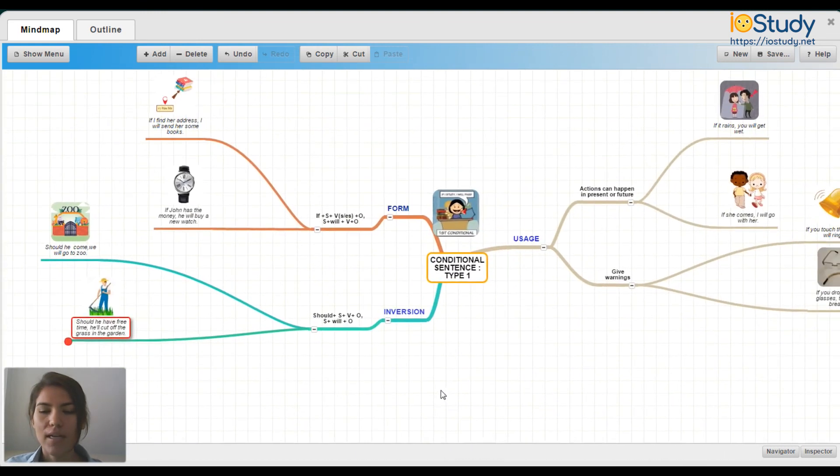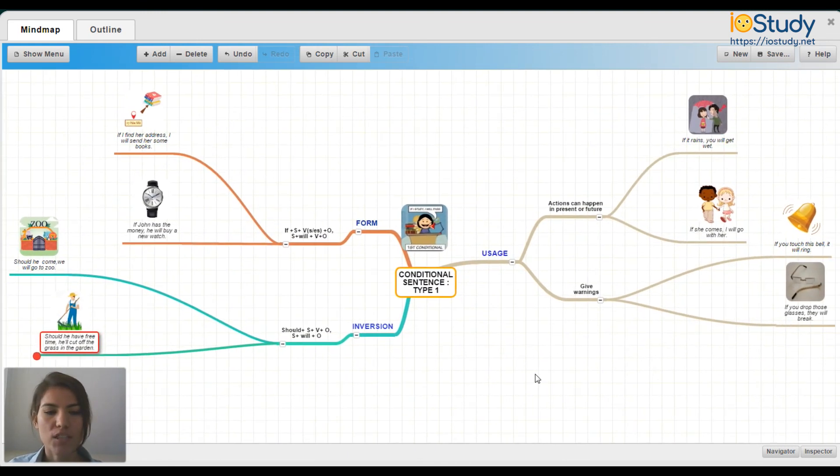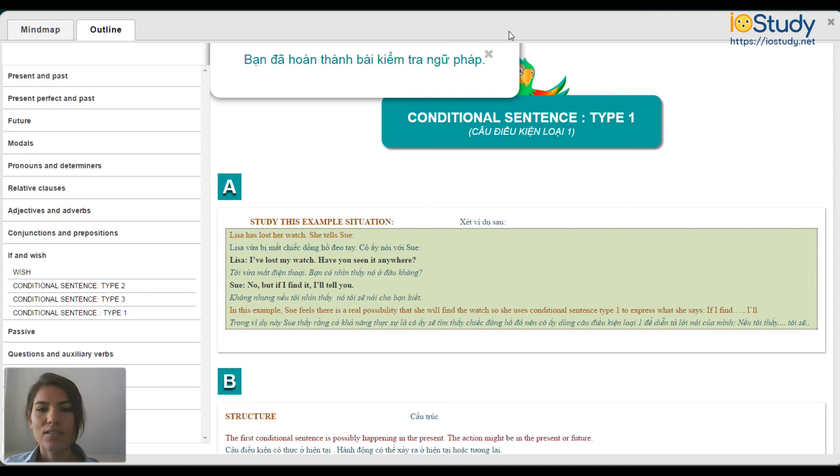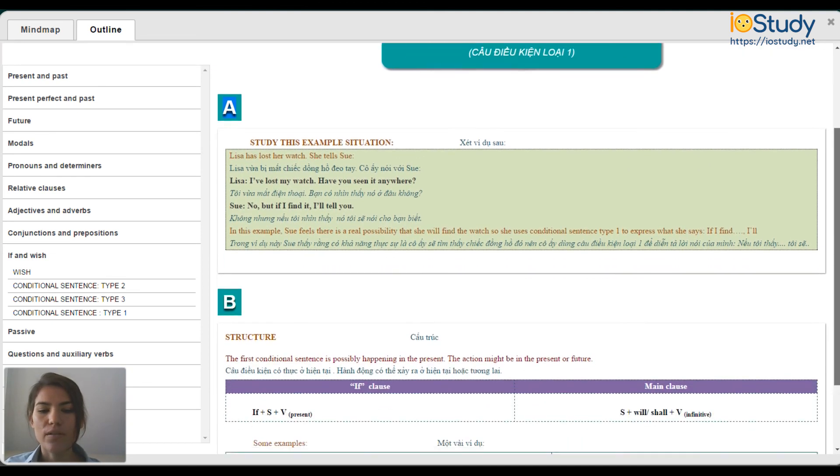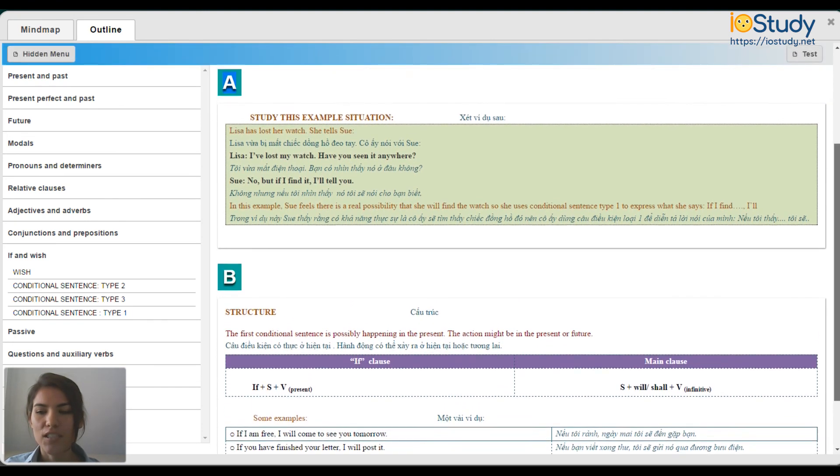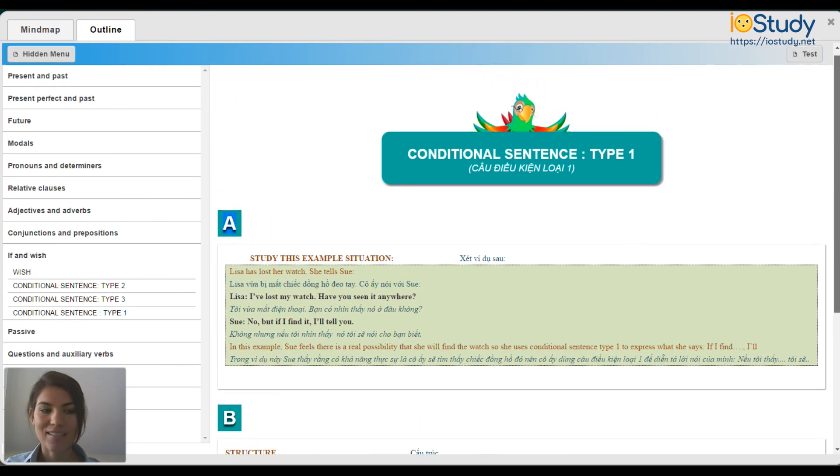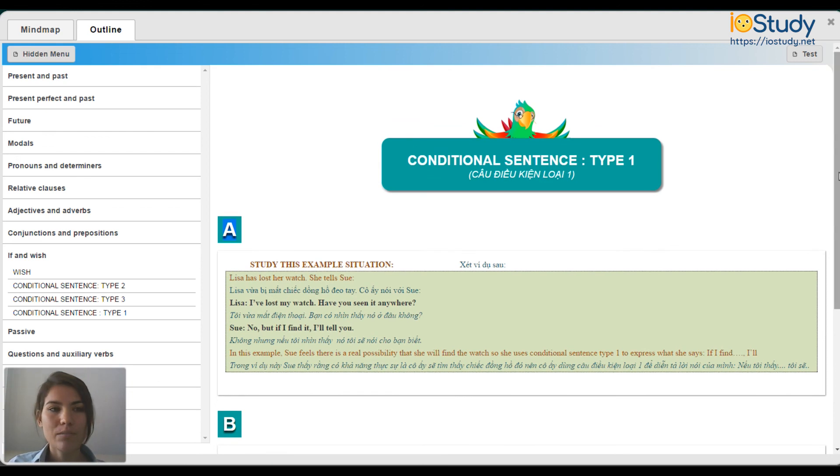So let's zoom out. Here you have again your conditional mind map that you can come back to refer to. Let's move to the outline. So conditional sentence type one. Here you can scroll through this and see some additional explanations and examples of sentences. You can read through this before you take the test. So in the next video we are going to take the test together and explain the answers.